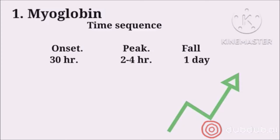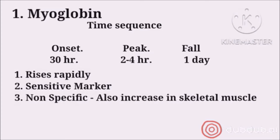Myoglobin rises very rapidly in the blood, which is an advantage. Its level peaks within 2 to 4 hours and remains present in the blood for about one day. It is a sensitive marker but also a non-specific marker, because myoglobin is present in heart muscles as well as skeletal muscles. So if a patient's myoglobin is very high, it does not necessarily mean the patient has had a heart attack, as skeletal muscle injury can also release myoglobin into the blood.